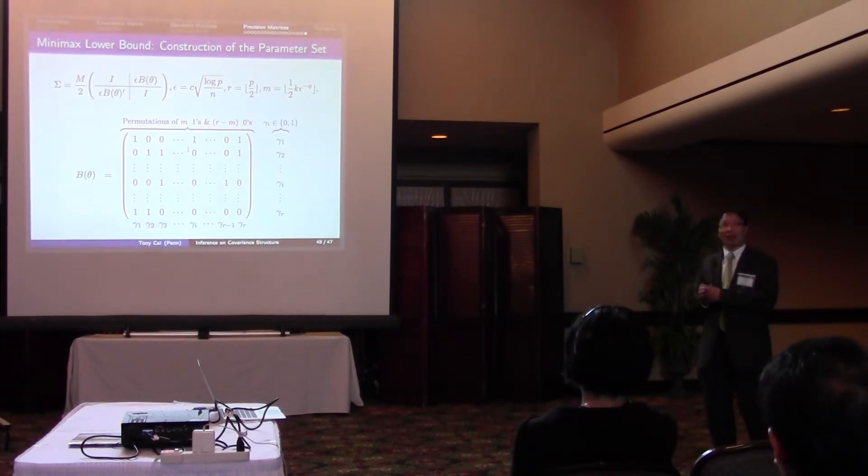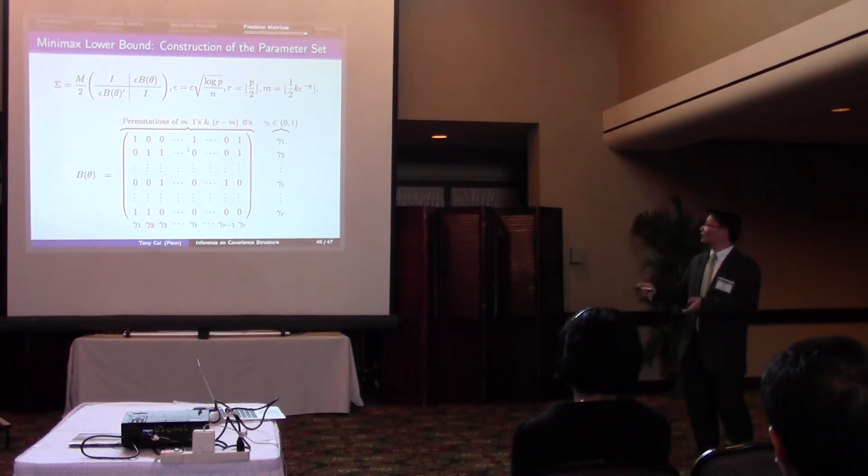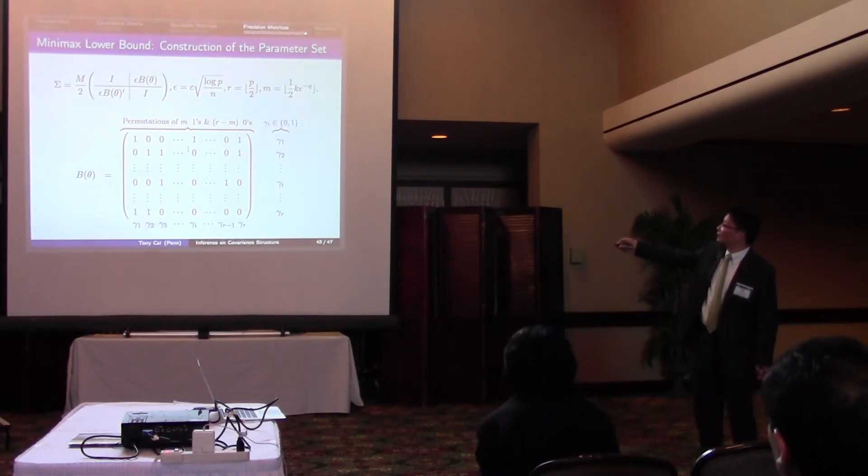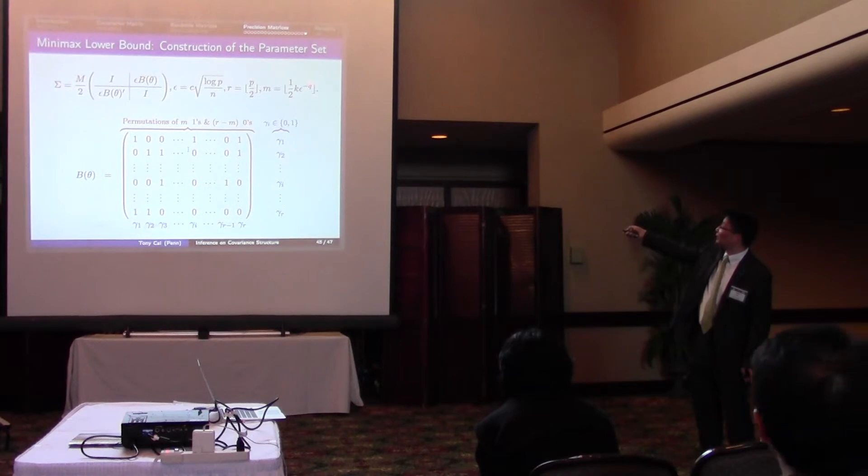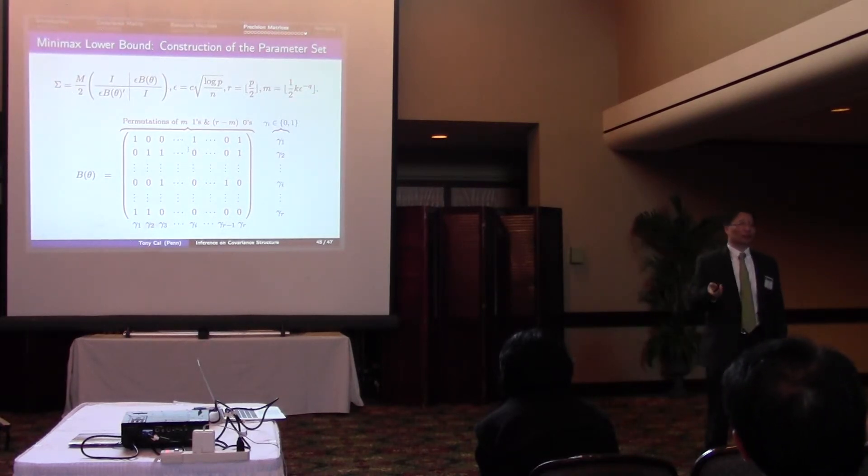So the key is that you lay down a class of precision matrices such that every row has a given number of non-zero elements. And the number of non-zeros is basically of this. If you take q to be 0, it's basically k over 2.